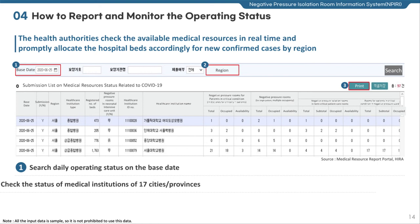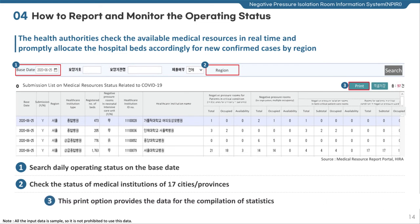With this menu, the Ministry of Health and Welfare (MOHW) and National Medical Center (NMC) can monitor the entire status of all 97 healthcare centers treating patients in critical condition. For the 17 cities and provinces, however, monitoring is limited to institutions within their own regions. For instance, the Seoul health authorities can search only institutions located in Seoul.